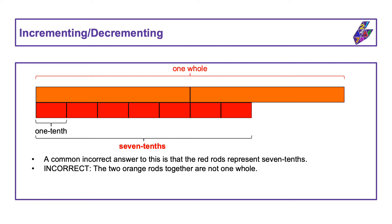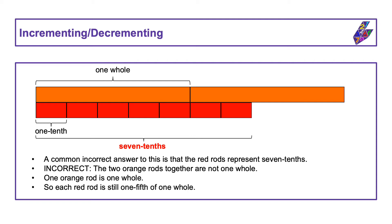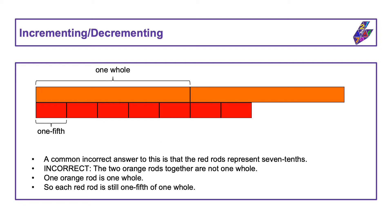But this is incorrect because the two orange rods together are not one whole. We were told that one orange rod is one whole, so two orange rods is two wholes. We need to remember that each of the red rods is one-fifth of an orange rod, or one-fifth of the whole. We can see that the red rods together are larger than one whole, so our fraction needs to represent something greater than one whole. Seven-tenths is less than one whole, so this can't be right.